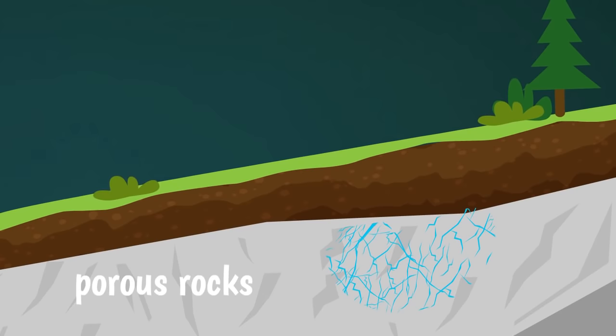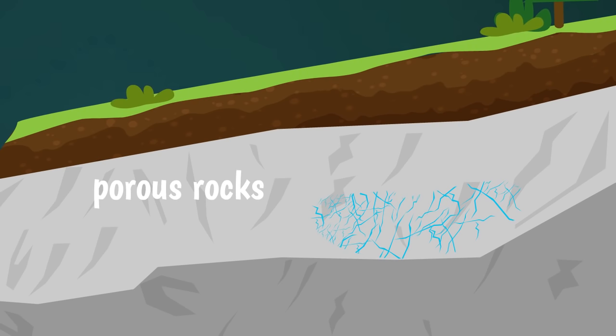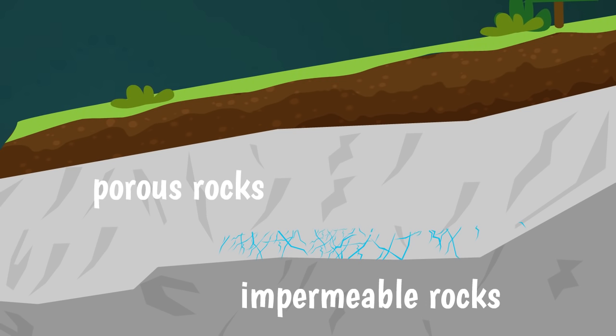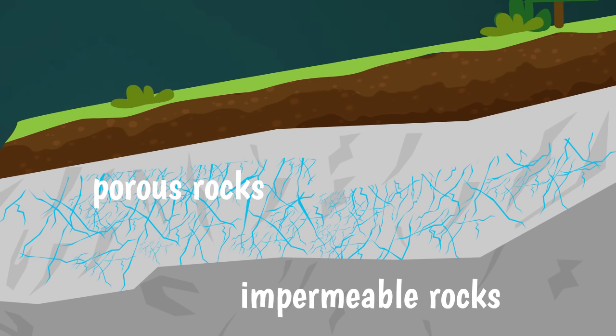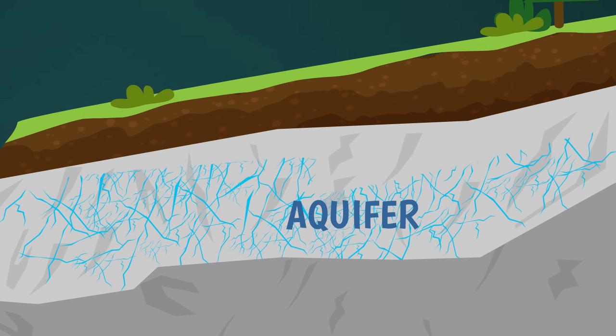But there are also rocks that have very few pores. In this case, the rocks are said to be impermeable, because water cannot pass through them. Now, if the downwards passage of water is blocked by a layer of impermeable rock, then water begins to collect in the porous rocks above. This way, it can form large underground reservoirs of water known as groundwater aquifers.